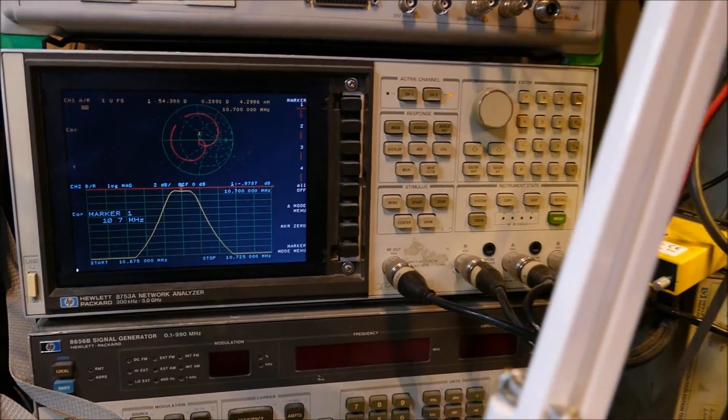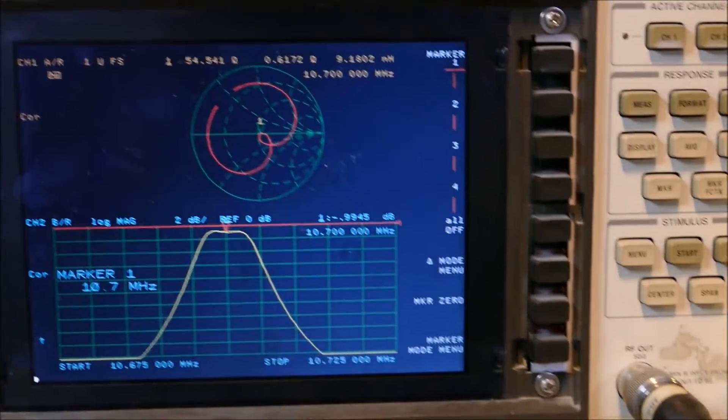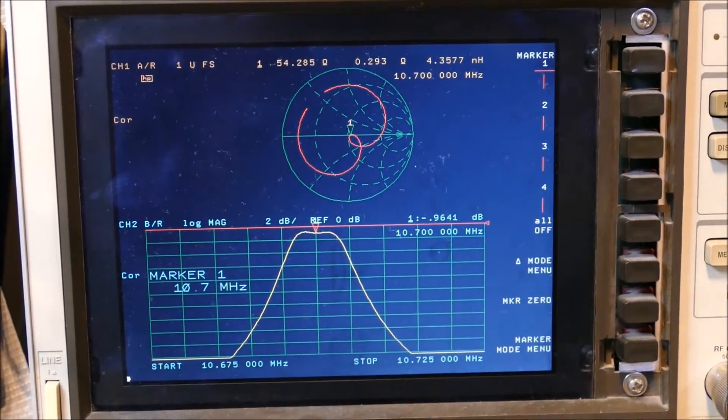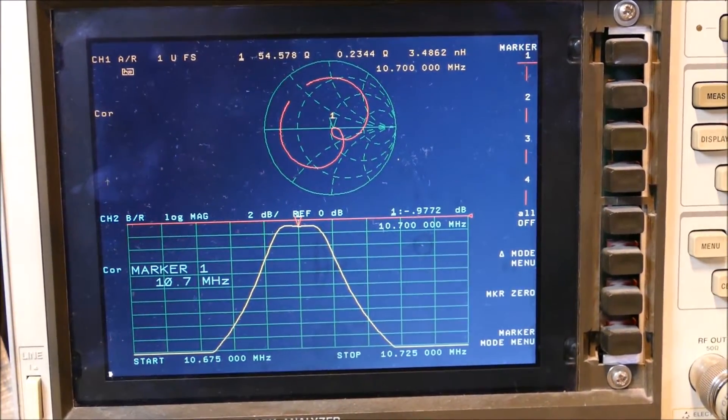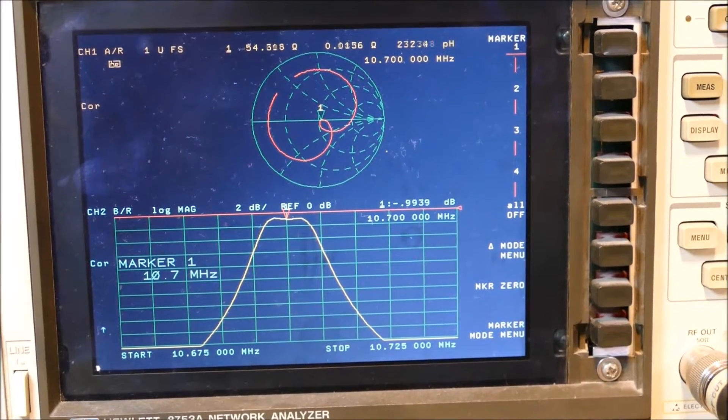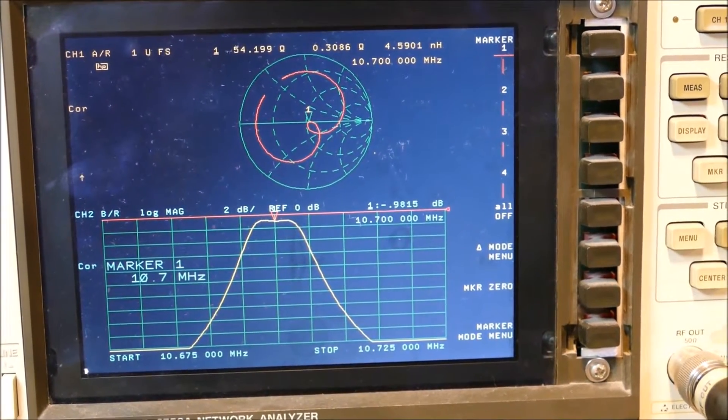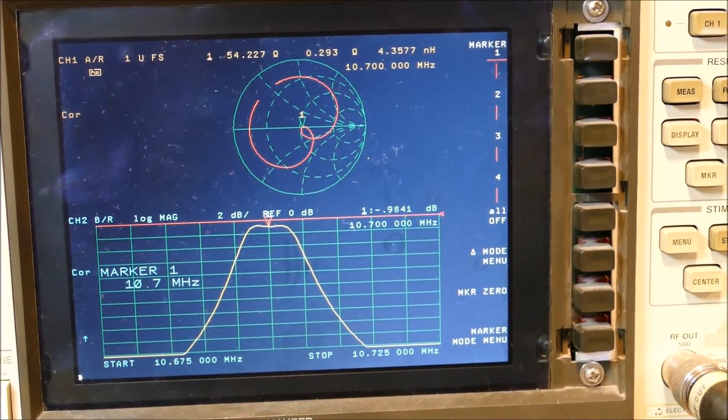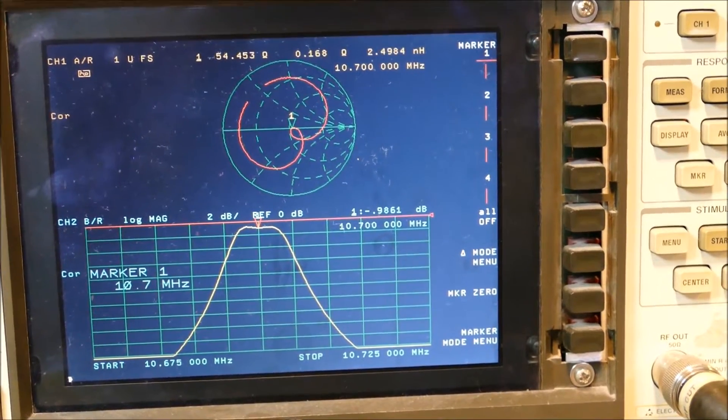And this is what we get from the VNA, a Vector Network Analyzer. And you'll see here that it's got a nice 10.7 MHz centre. Pretty much centred and looks fairly well matched and pretty happy with that.